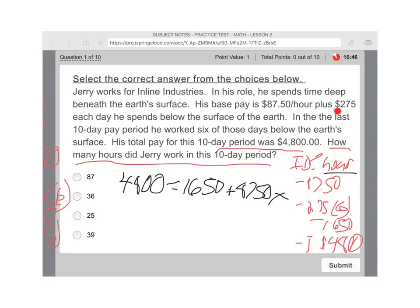The first part of his pay is the $275 times six days below the surface. That's $1,650 plus his hourly wage, $87.50 times however many hours he worked. So that's the equation. So everything you just learned in the skill section, now you're just applying in the word problem. And again, this is how the GED test works. So to work this out quick,